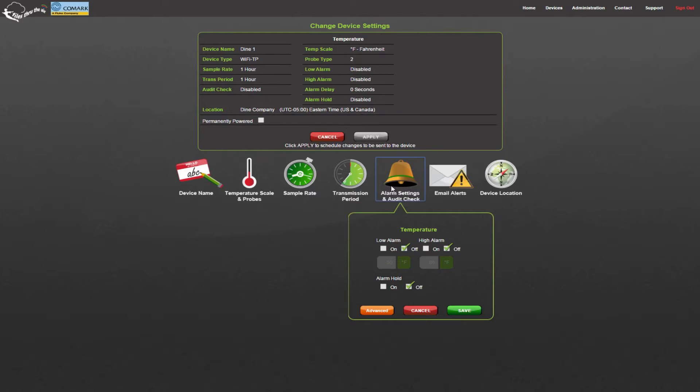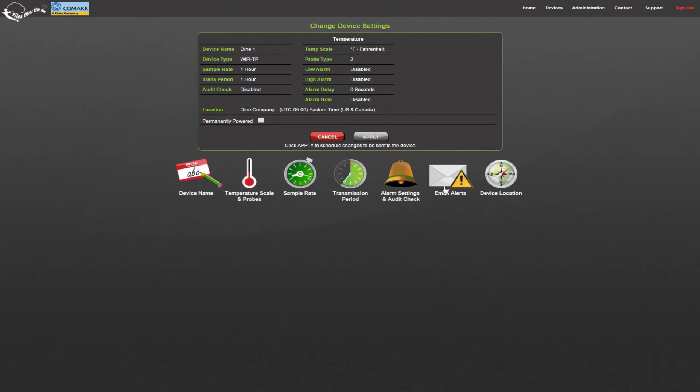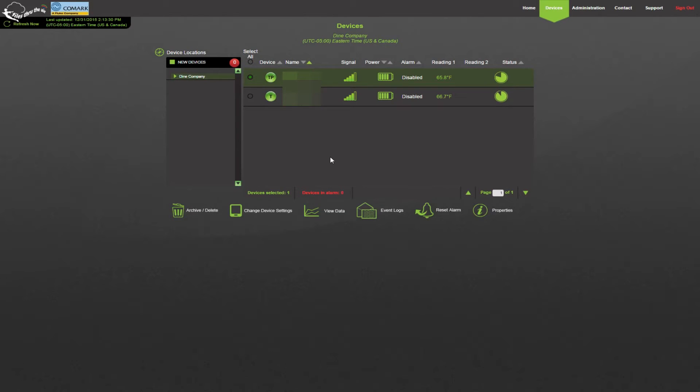I can set high and low temperature alarms. And I can set up email and text message alerts should my alarms go off. I can also view the data my devices have recorded.